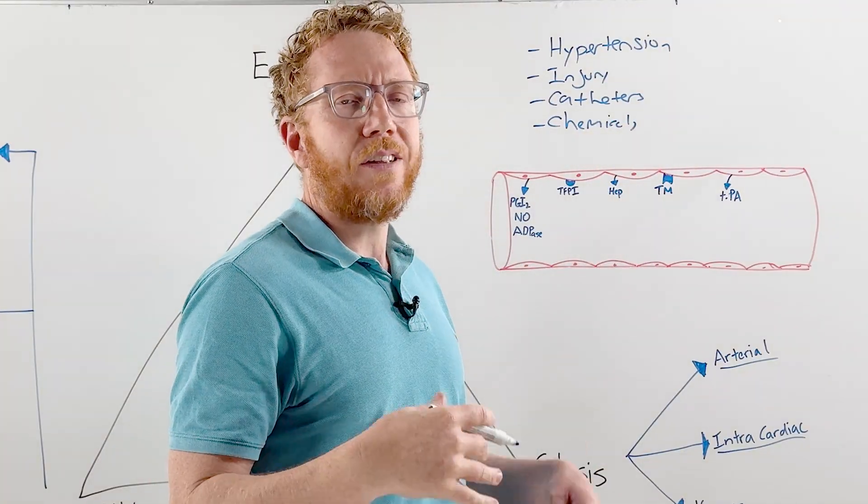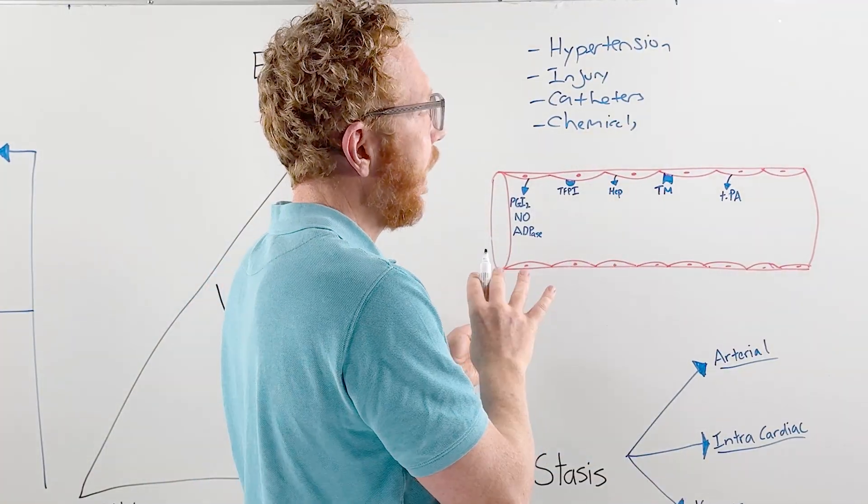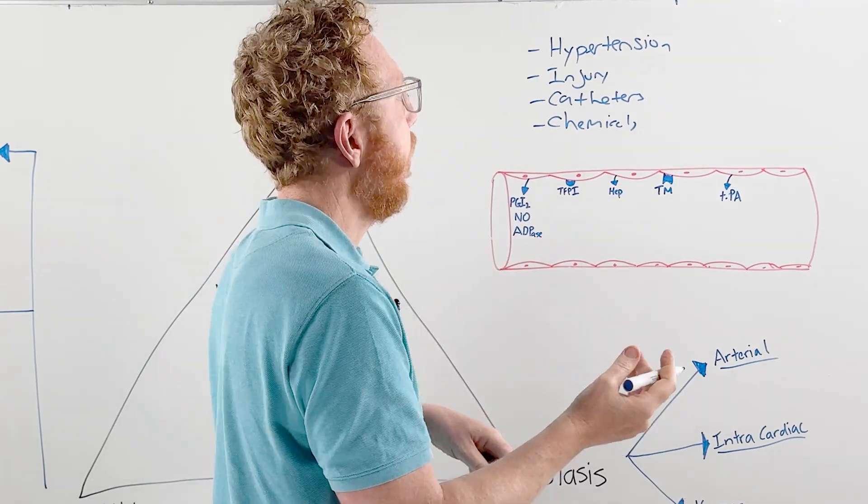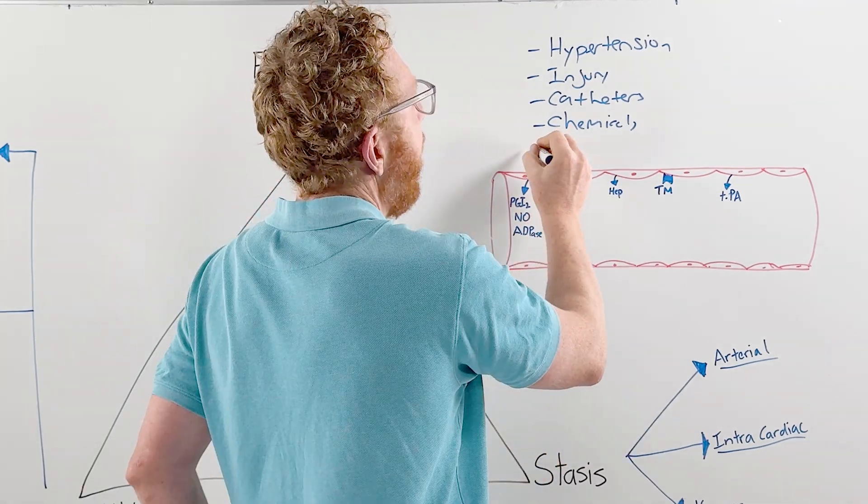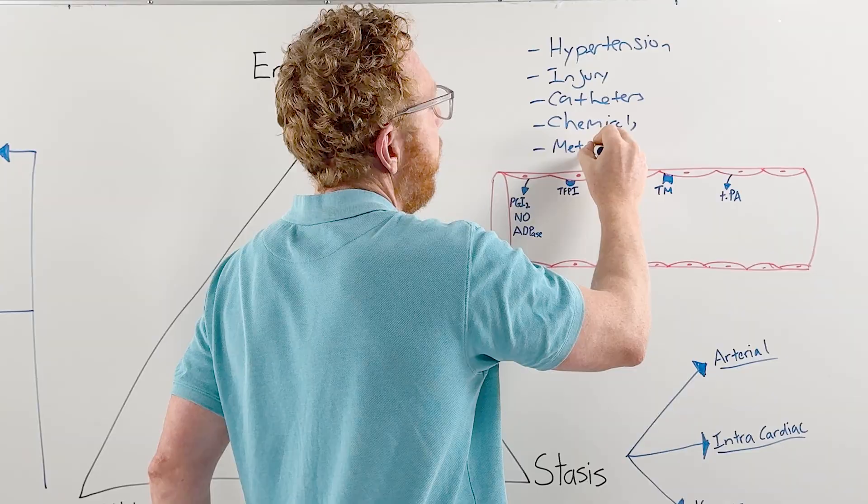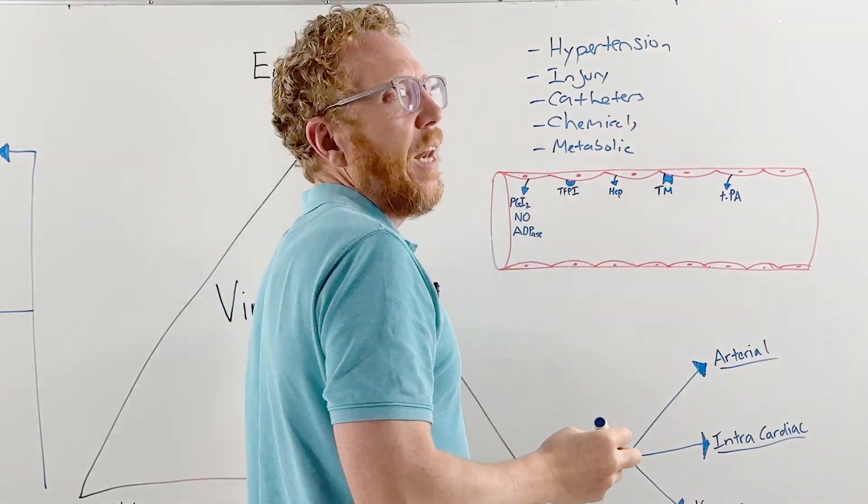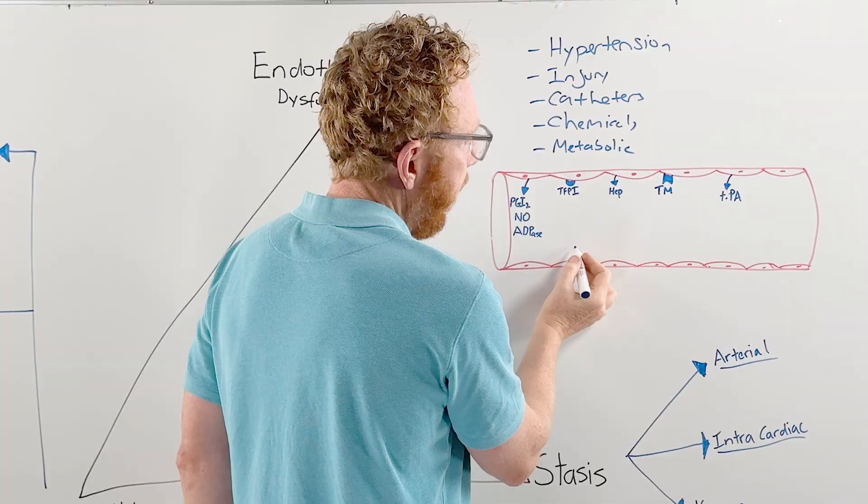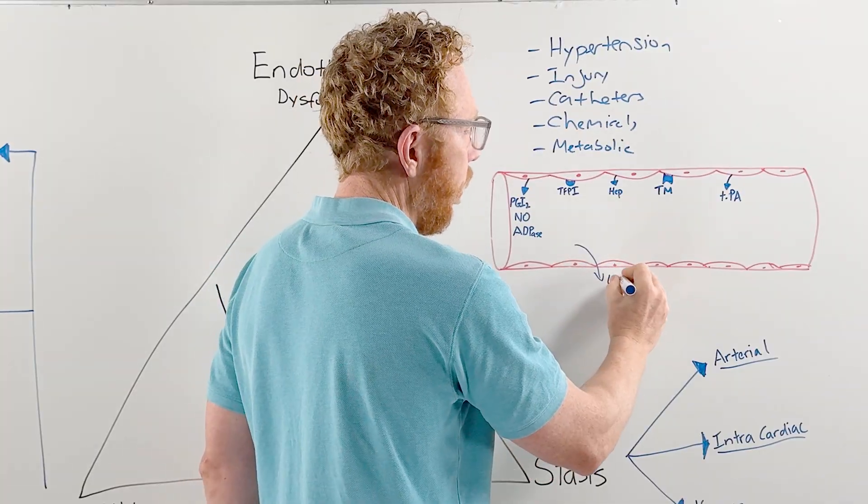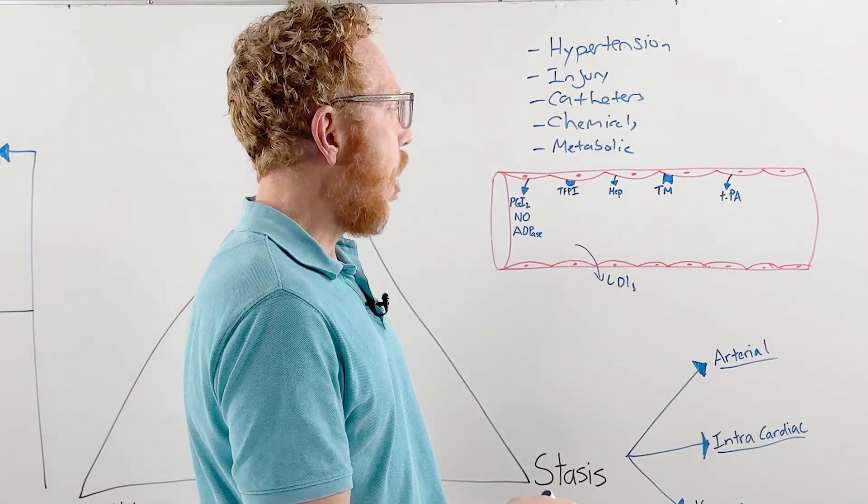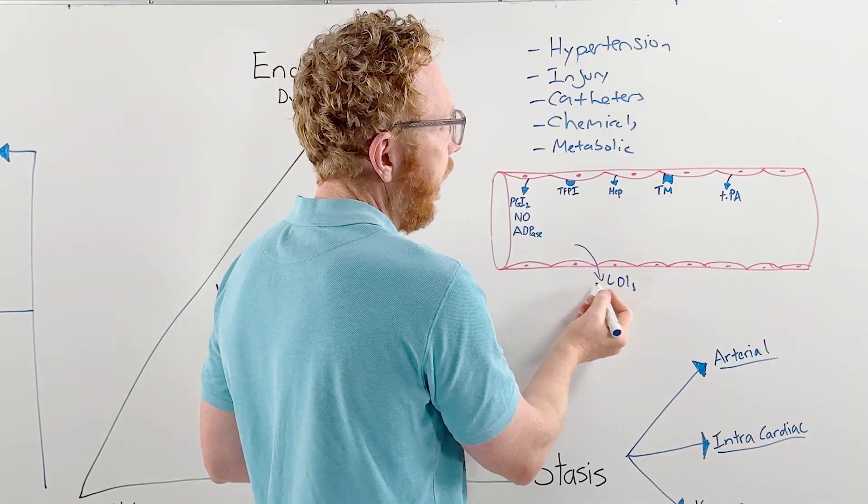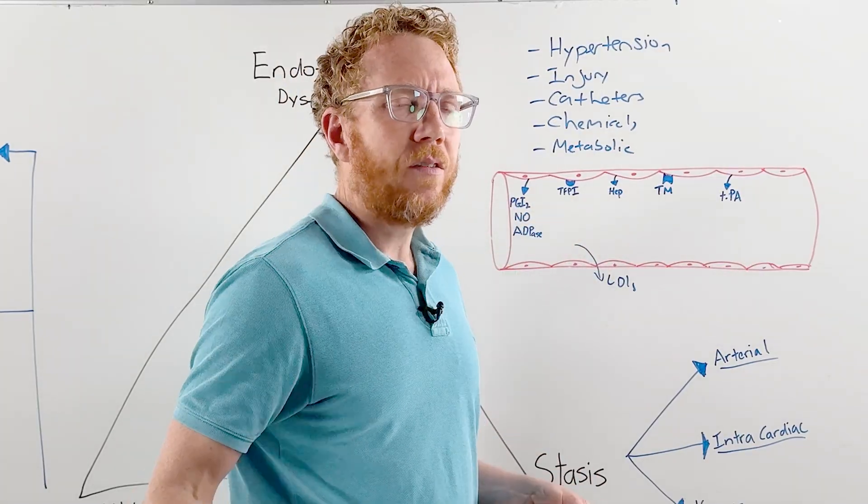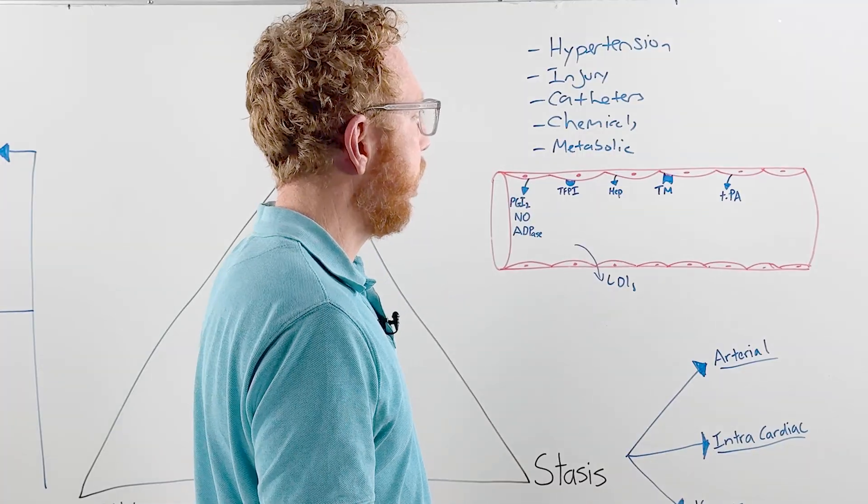Certain chemicals in the blood could be toxins like from smoking or chemicals from infections like exotoxins, endotoxins, or even metabolic products. Metabolic products such as LDLs—a type of cholesterol—have a likelihood of going into the blood vessel wall, oxidizing and causing injury or inflammation to the endothelium, which reduces these factors and increases the likelihood of clots.